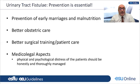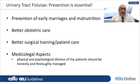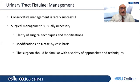Before proceeding to management, we should discuss prevention. For obstetric fistula, preventing early marriages and malnutrition are mandatory to decrease numbers, together with better obstetric care. For iatrogenic causes, better surgical training and better patient care will decrease patient numbers. There is also the medico-legal dimension — these patients are prone to legal issues, and they are under significant physical and psychological distress, so they need to be honestly and thoroughly managed.